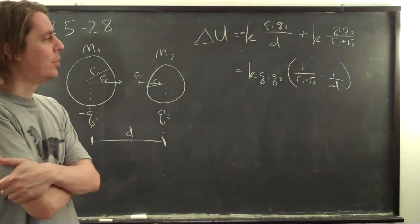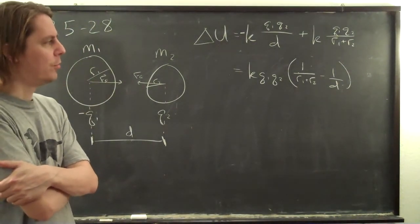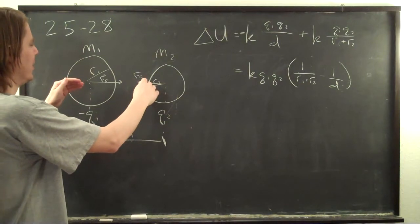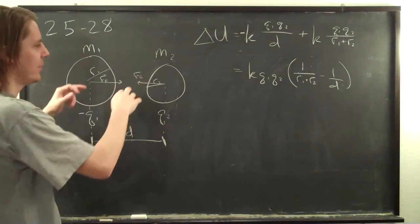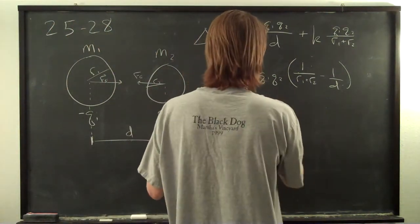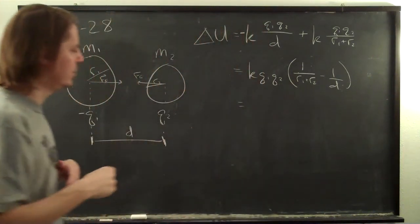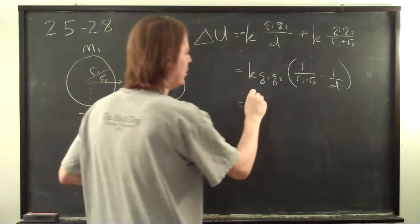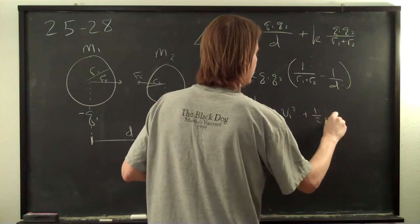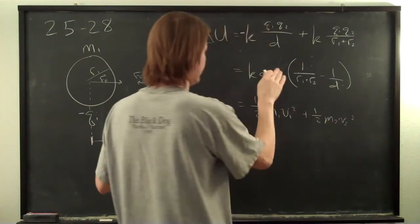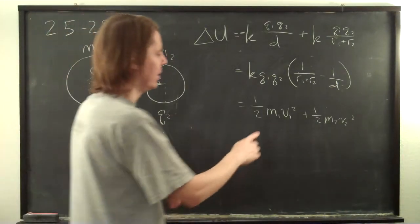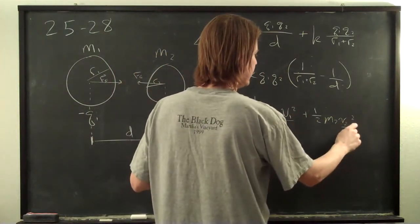So now usually all we would have to do is set that equal to 1/2 mv squared for a particle and solve for v. But the tricky thing here is they won't be at the same velocity. They have the same force, but different masses, so different accelerations, so different velocities. So what you would have to do is take this and say this is also equal to two independent kinetic energies, 1/2 m1 v1 squared plus 1/2 m2 v2 squared. So you can't solve for the velocities because there's two of them. So we have one equation and two unknowns, so that's the problem.